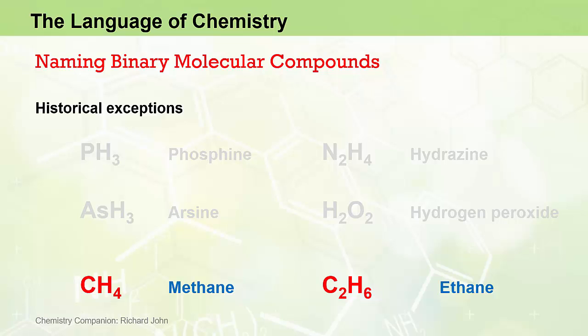CH4 and C2H6 are hydrocarbons — molecules containing just carbon and hydrogen — and they are a subset of organic compounds. Organic compounds have their own set of naming rules, so CH4 (methane) and C2H6 (ethane) fall under a different set of naming rules within organic chemistry, which will be covered later in this video series.